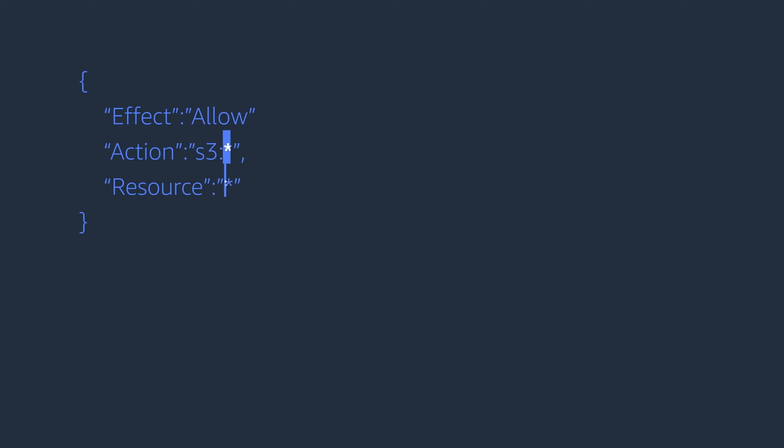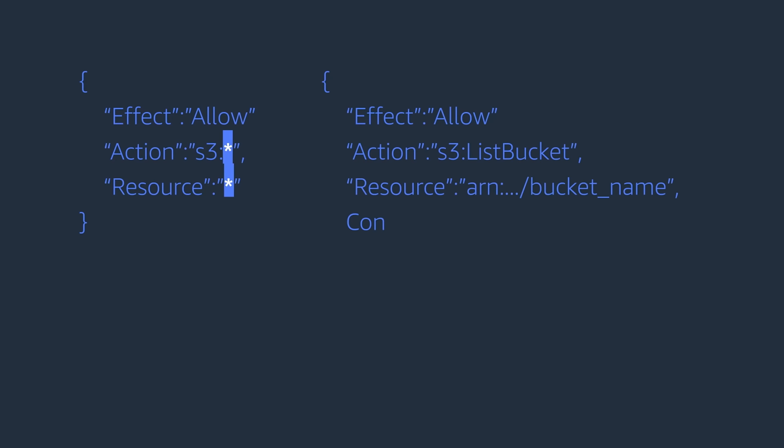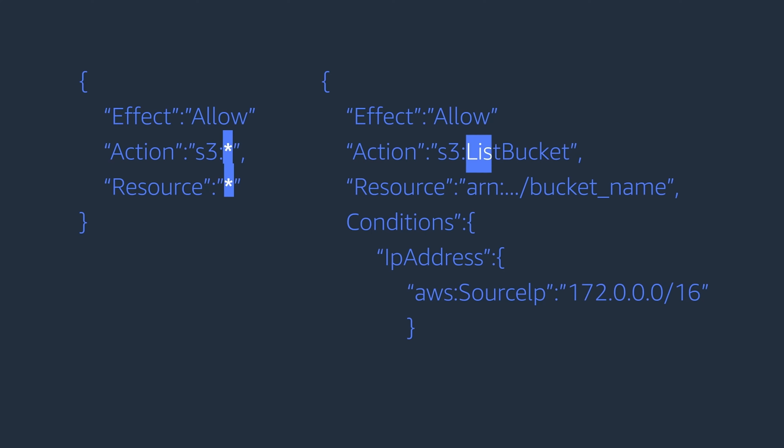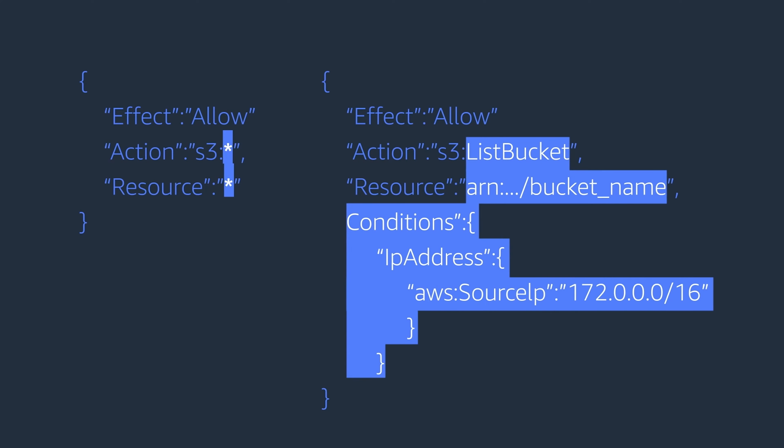Finally, we should grant least privilege access. For our colleagues, it means giving them the minimum permissions they need to perform their job. This prevents unintended access. So how do we do this? In our IAM policies, instead of using wildcards, we should be scoping down our policies and being as specific as possible. We can specify the service actions, the resources, and the conditions that must be true for AWS to allow access.